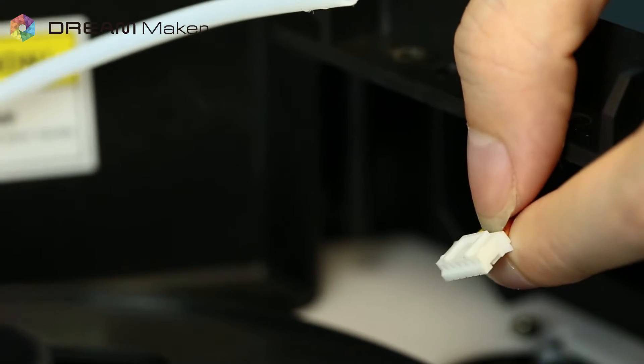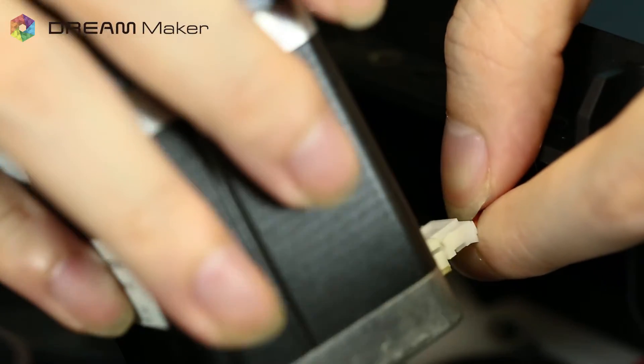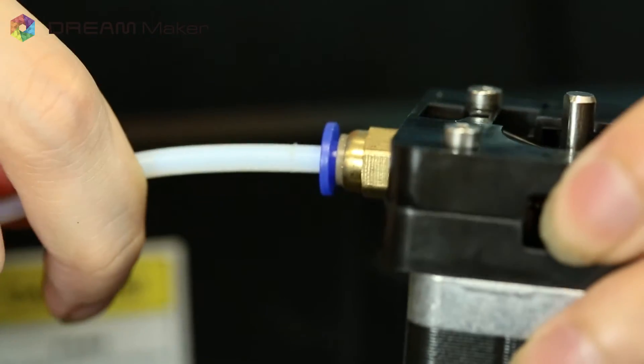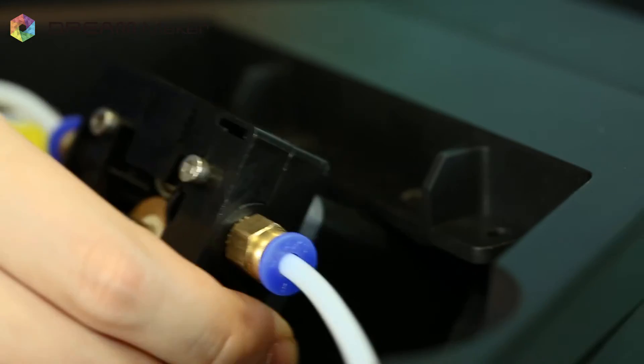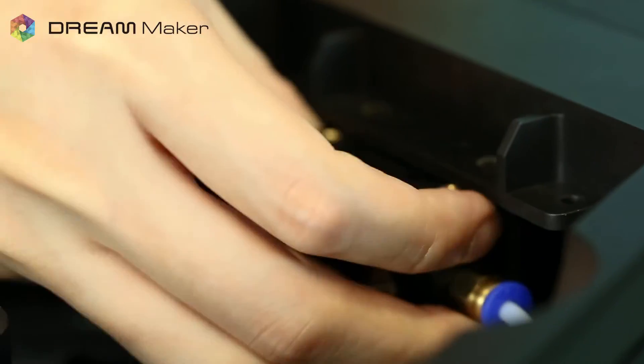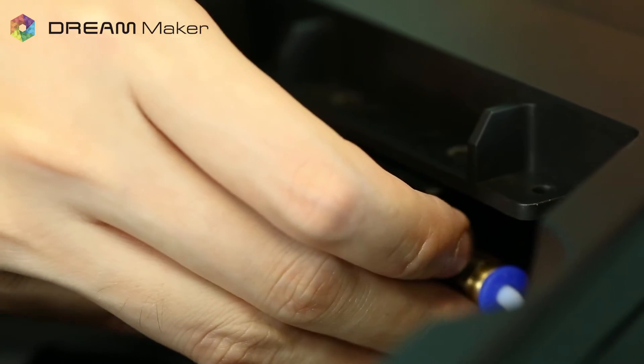Put the tube back into the connector. To put back the extruder, connect the ribbon cable into the stepper motor and put the tube back into the connector. Put the extruder back into the 3D printer and secure with two M3 screws.